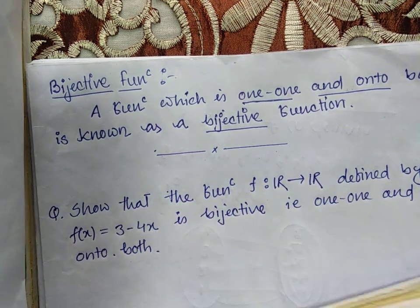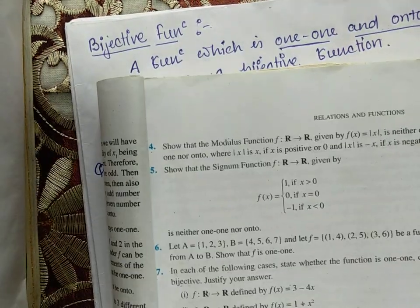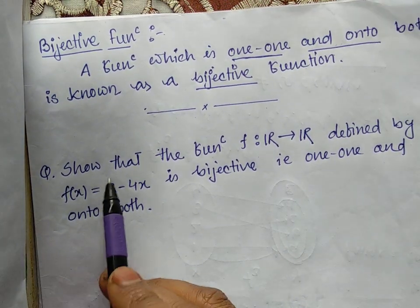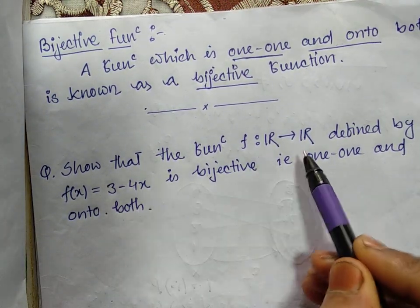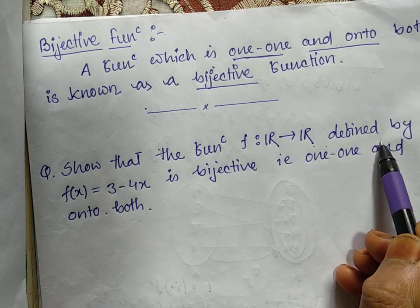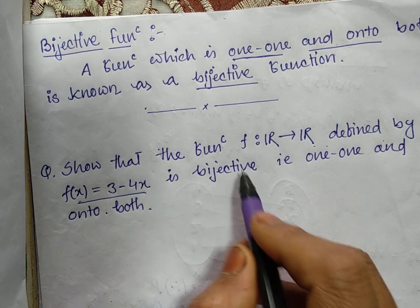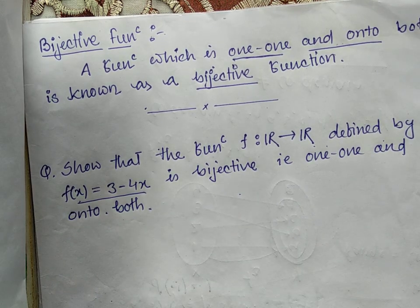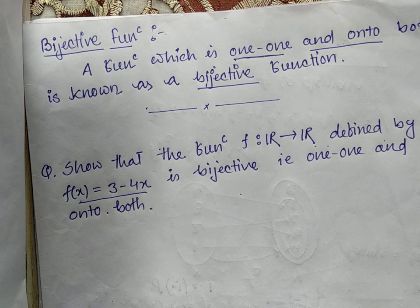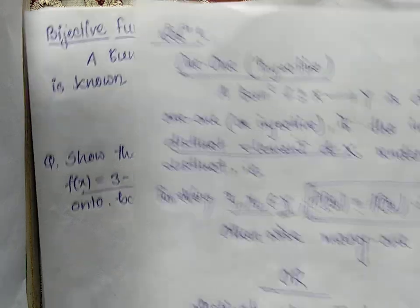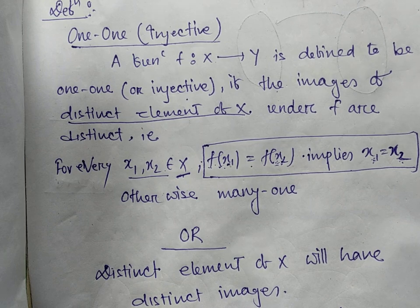So let us try to discuss question number 7, roman numeral 1. Show that the function f from real numbers to real numbers defined by f(x) = 3 - 4x is one-on and onto. So one-on and onto - what is the condition? There are two different methods to check if the function is one-on or not.